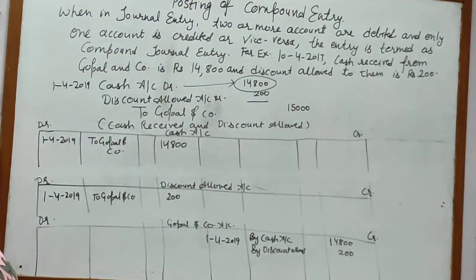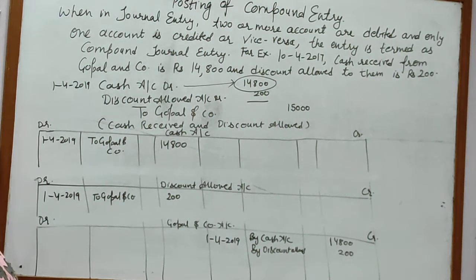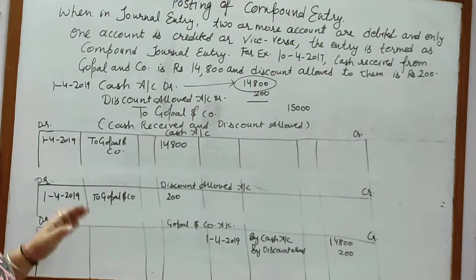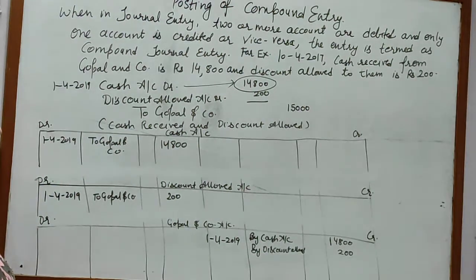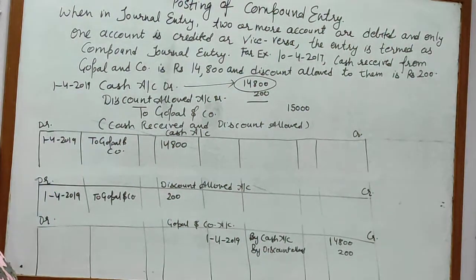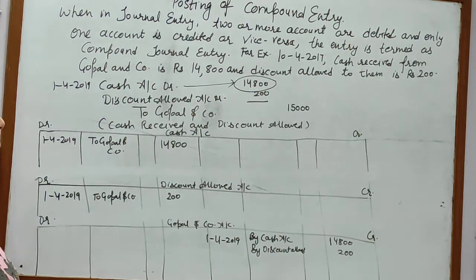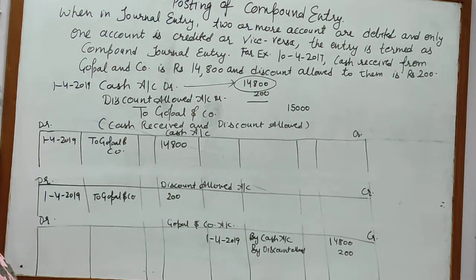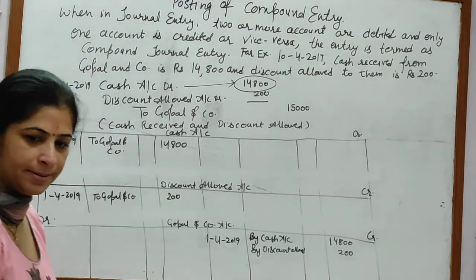Compound entry means when two or more accounts are debited and one is credited, or one is debited and two or more are credited. Then you have to maintain three accounts at a time and post on the debit and credit side of the respective accounts.